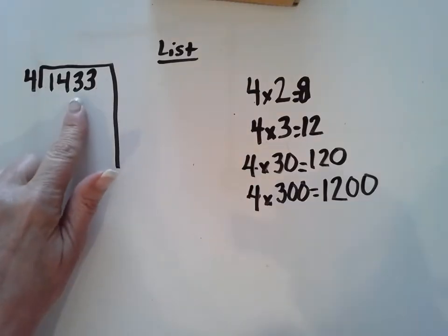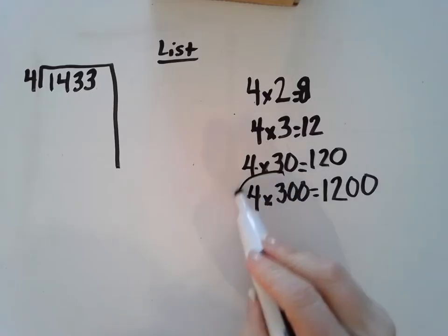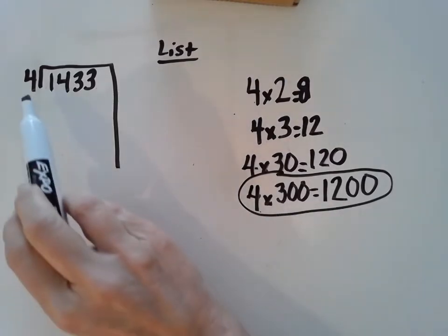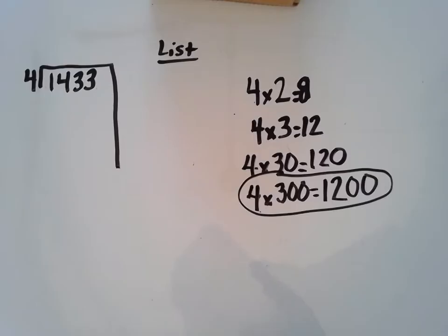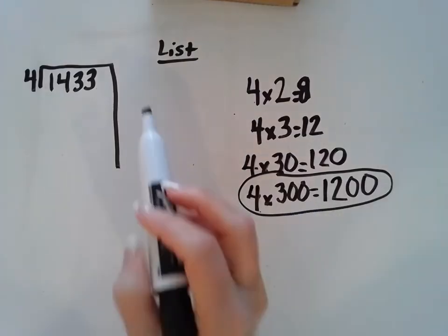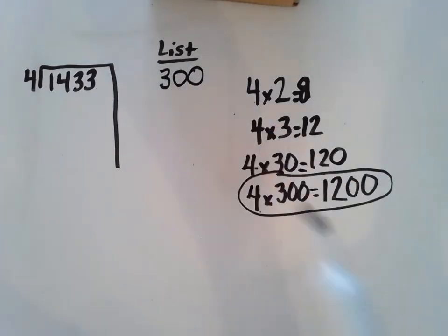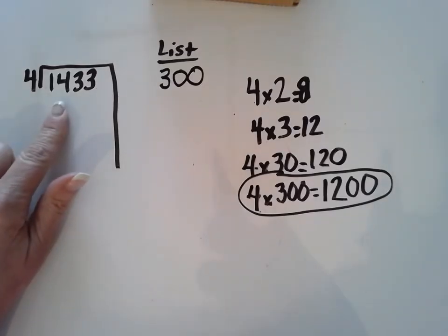That's pretty close. So I'm going to use 300 as my friendly number, and I've got to put every single number into this problem. The 4 is already in the problem. The 300 is our friendly number, so I'm going to put it to the friendly number list. The 1,200 is going to subtract out of the 1,433.